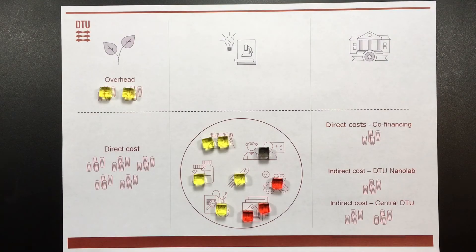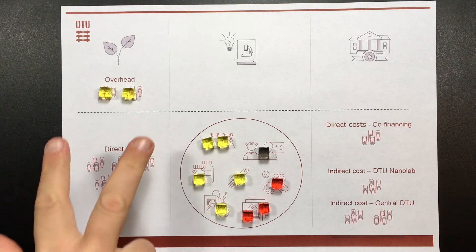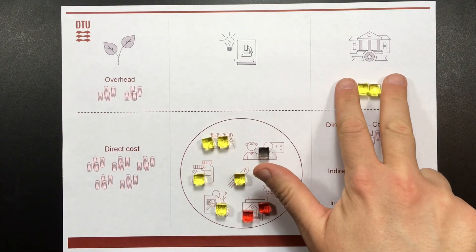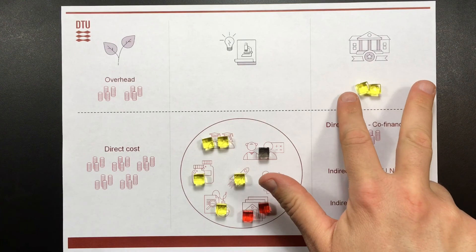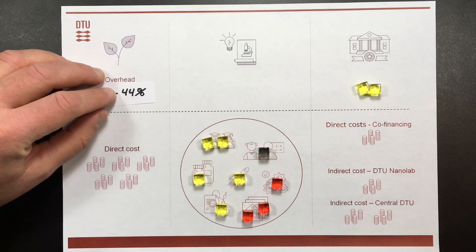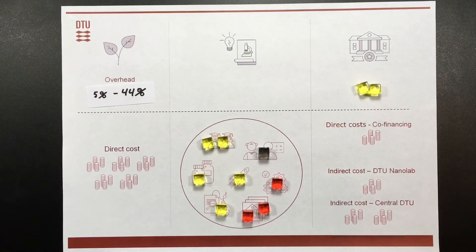Most funding agencies acknowledge that DTU has indirect costs and are willing to at least partly pay them. This is done through a fixed overhead percentage based on the sum of the direct costs. The overhead percentage can vary from 5% up to 44%. A low overhead percentage means that DTU can afford fewer projects. For you as a project leader, a low overhead percentage reduces your possibility to get co-financing, and you run a higher risk of having your budget rejected.